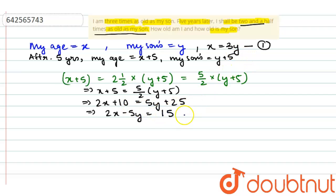Now putting 1, we put 3y in place of x, and we get 2 into x, that is 2 into 3y, that is 6y minus 5y is equal to 15, and this implies y is equal to 15.